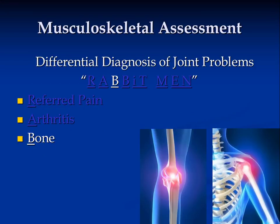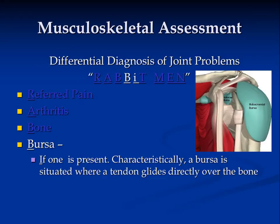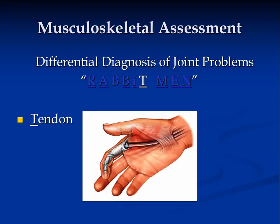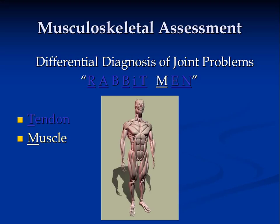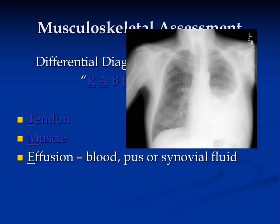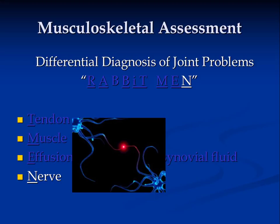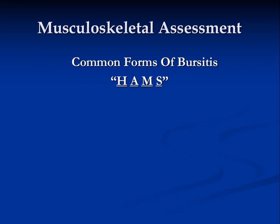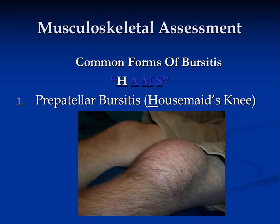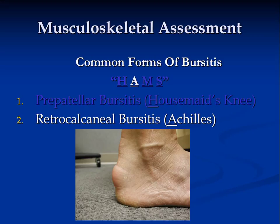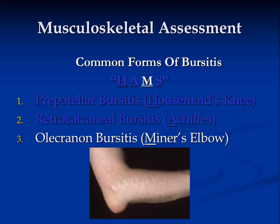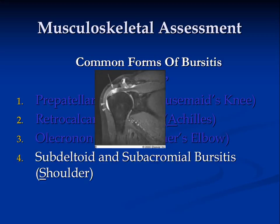Next, we want to determine if the joint problem is because of bone, bursa (if one is present), tendon, muscle, effusion, or nerve pain. A mnemonic to help remember the common forms of bursitis is HAMS: prepatellar bursitis or housemaid's knee; retrocalcaneal bursitis or Achilles tendon bursitis; olecranon bursitis, also called miner's elbow or student's elbow; and subdeltoid or subacromial bursitis — bursitis of the shoulder.